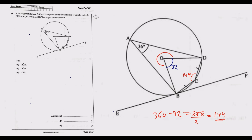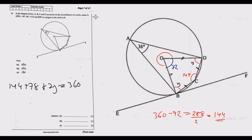Now we need to find the remaining angles. The sum of all angles at the center should equal 360 degrees. We know 72 and 144 are accounted for. Since BC equals CD, these are radii — so the two base angles y are equal. That gives us: 144 plus 72 plus 2y equals 360 degrees.